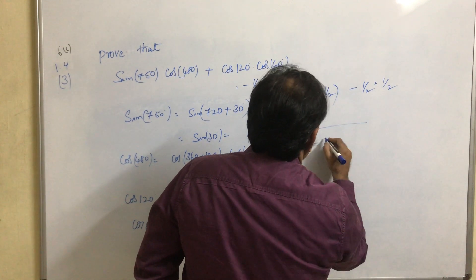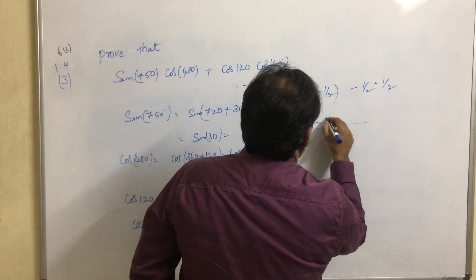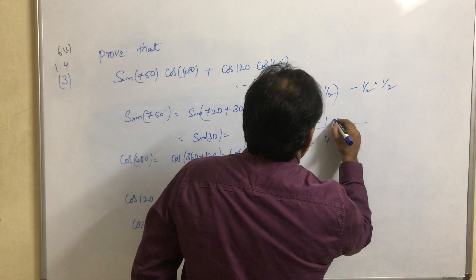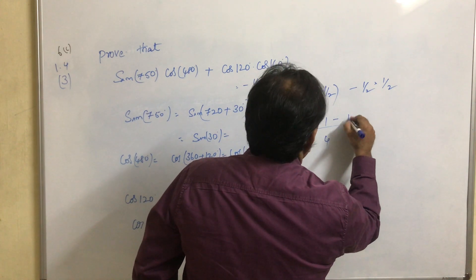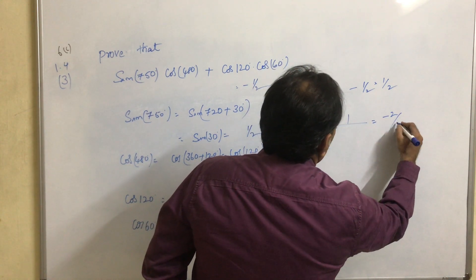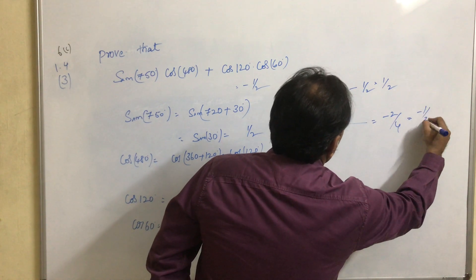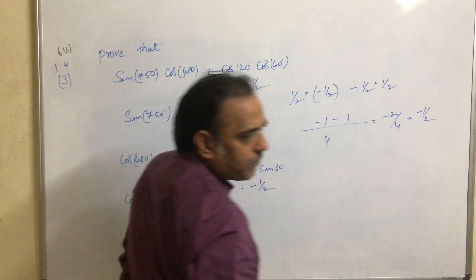The denominator is 4, and the numerator gives minus 1 and minus 1. So we get minus 2 by 4, which equals minus 1 by 2.